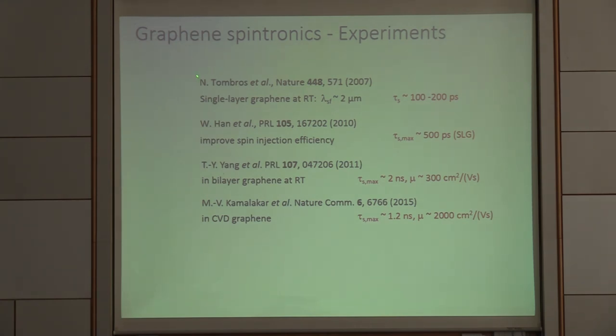The first experiment actually started off in the group of Bart van Wees. Nicholas Tombros was reporting in 2007 values in the range of 100 to 200 picoseconds. So that was kind of a disappointment, because the theoreticians were motivating experimentalists to do experiments saying you can get large numbers. And then these numbers appeared.